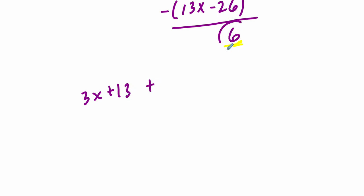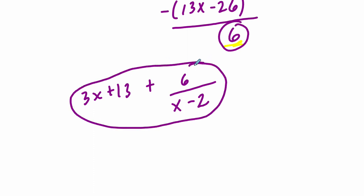Then our remainder is this piece right here, 6, over g(x), which we were dividing by, over x minus 2. And this is our answer. We're done. All right. Hope that helped.